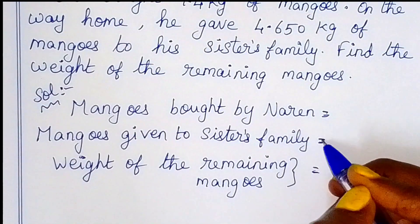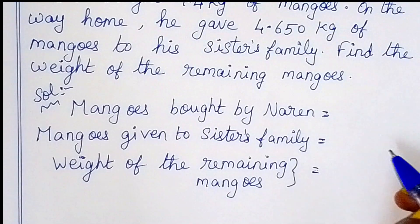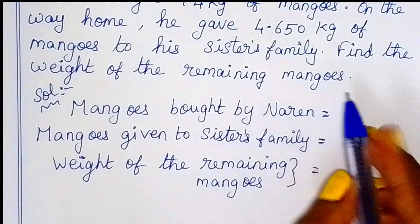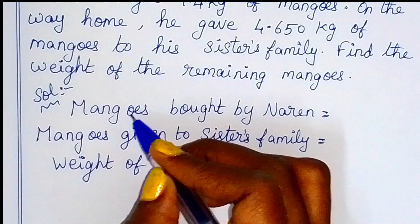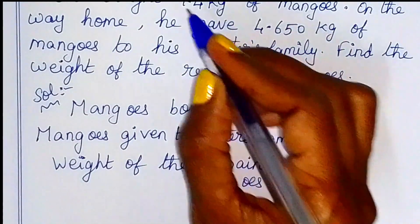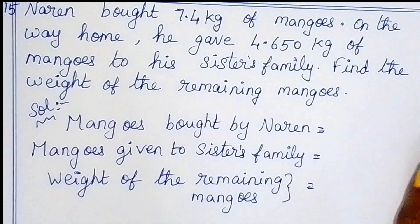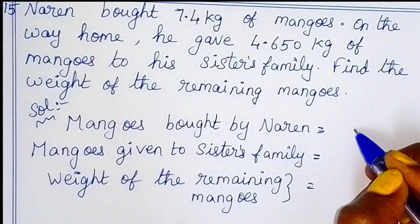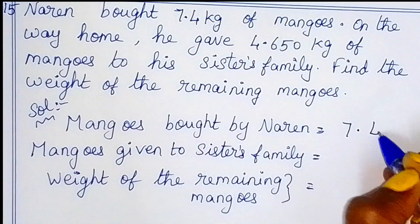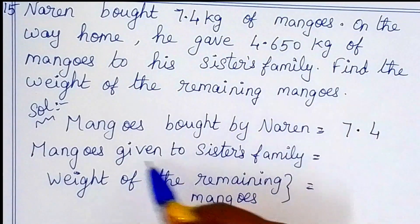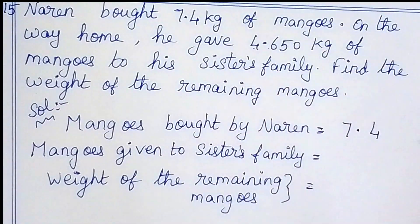What we have learned about word problems: we can add numbers straight and add or subtract. Mangoes bought by Naren: 7.4 kg. Decimal subtraction, decimal point straight. First, 7.4. Mangoes given to sister's family: 4.650. Point straight, 4 whole number, 6, 5, 0.